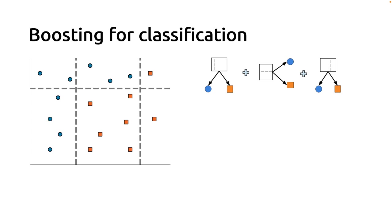We do that iteratively over and over again until we decide that we have converged — for instance, by not making too many prediction errors on the training set. Those three prediction rules from three small decision trees are the elements of the boosting ensemble. We train them sequentially, one after the other, each trying to predict better on the prediction errors of the previous models.